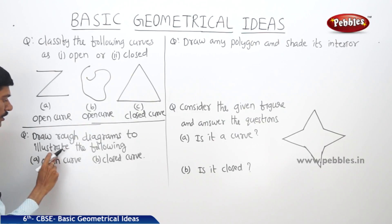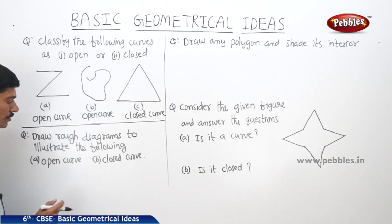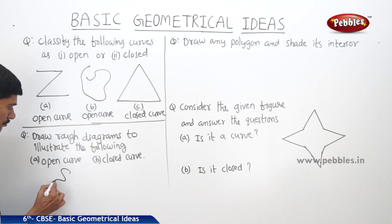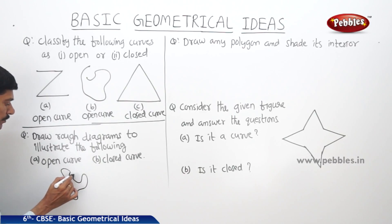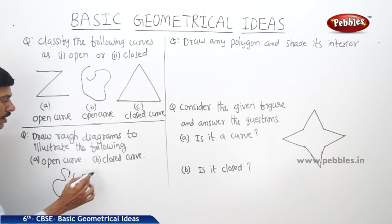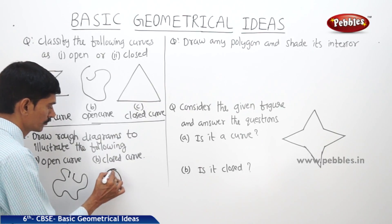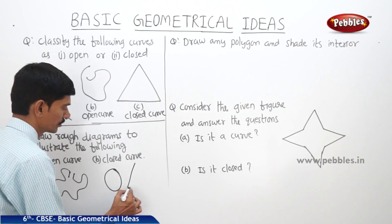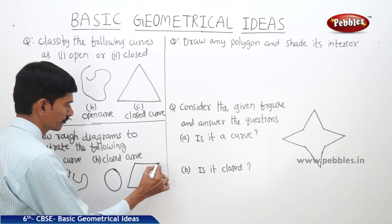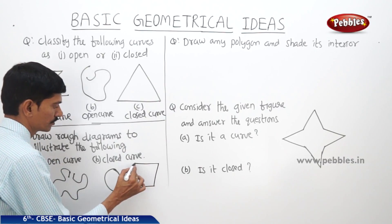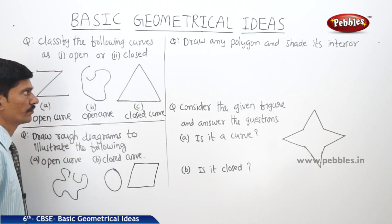The next question: draw rough diagrams to illustrate the following — an open curve and a closed curve. You can draw any open curve. This is an open curve because the two end points of this curve are not joined. For the closed curve, we can draw a circle or any polygon with four line segments. This is a closed curve.